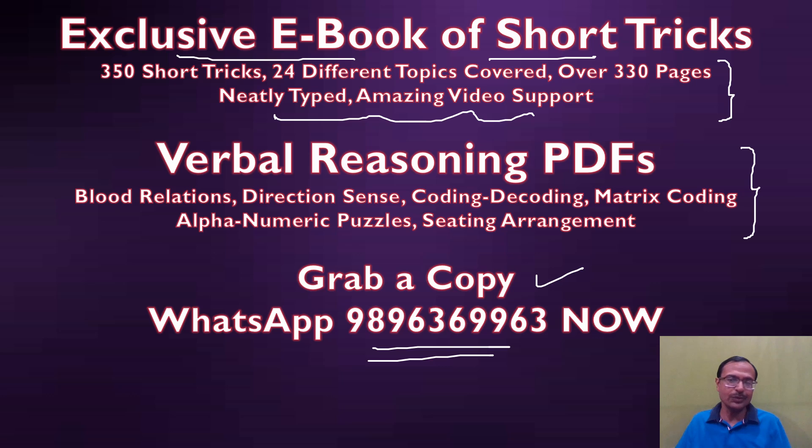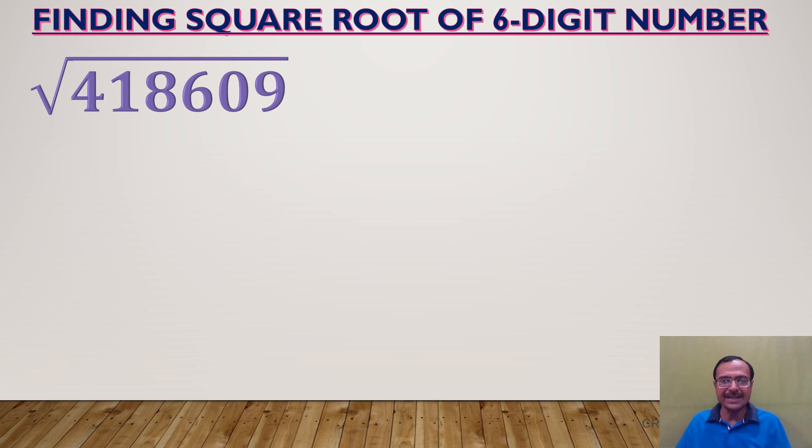Let's see the problem in hand. Here you can see we have a six digit number: 418609. So if you make pairs of this number from the right hand side, we have three pairs, so my answer is going to be a three digit number.